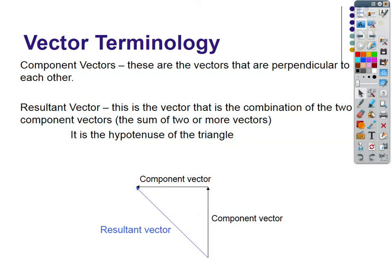Getting into the vectors part: there are two terms — component vector and resultant vector. Component vectors are the two perpendicular sides of a right triangle, not the hypotenuse. The resultant will always be the hypotenuse. We call it a resultant because it is the combination of the two component vectors. A² + B² = C² gives the resultant. It will usually be an angled value — a combination of the vectors involved.